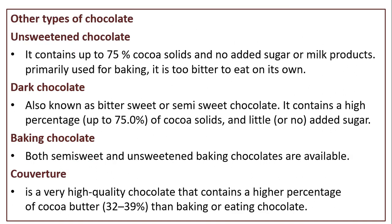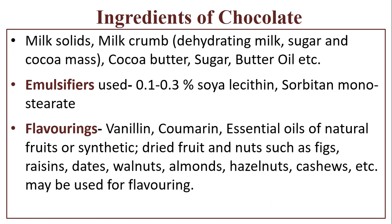Other types of chocolate: unsweetened chocolate contains up to 75% cocoa solids with no added sugar or milk products, primarily used for baking — it is too bitter to eat on its own. Dark chocolate, also known as bittersweet or semi-sweet chocolate, contains a high percentage — up to 75% — cocoa solids and little added sugar. Coverture is a very high-quality chocolate that contains a higher percentage of cocoa butter — 32 to 39% — than baking or eating chocolate.